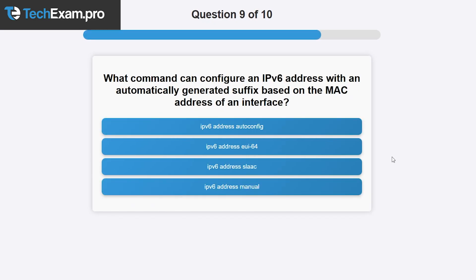Question eight: what command configures an IPv6 address with an automatically generated suffix based on the MAC address of an interface? 'IPv6 address autoconfig' does automatically generate an address but uses SLAAC (Stateless Address Autoconfiguration), letting the router assign an address rather than generating one from the MAC. 'IPv6 address EUI-64' generates an interface identifier that automatically uses the device's MAC address — that is exactly what the question asks, making it the correct answer.